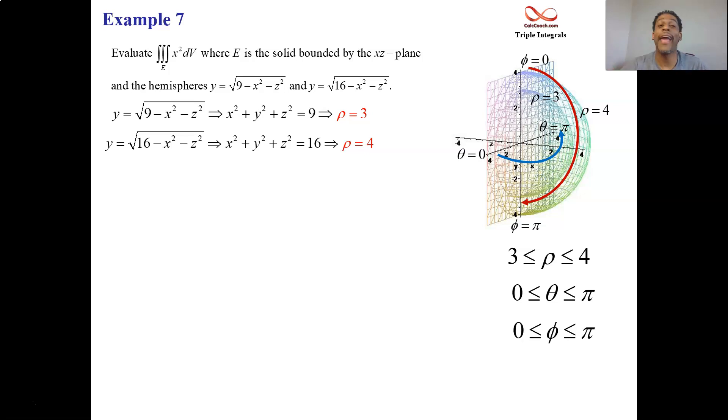What about the integrand, x squared? What's x? x is equal to, well, it was r cosine theta, but now r is rho sine phi. So rho sine phi cosine theta is what x is, you square that, rho squared sine squared phi, cosine squared theta. That's the integrand. But then there's dv. There's a Jacobian. The rho squared sine phi should be in red there.